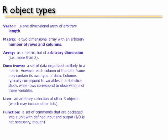So first, just to review, here's the major object types in R: vectors, matrices, data frames, lists, and functions.